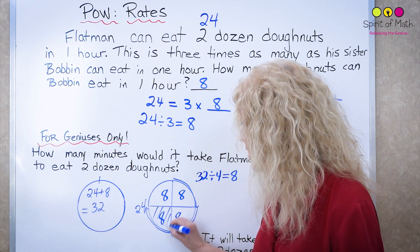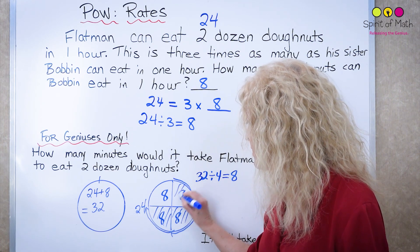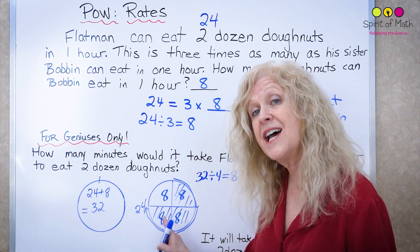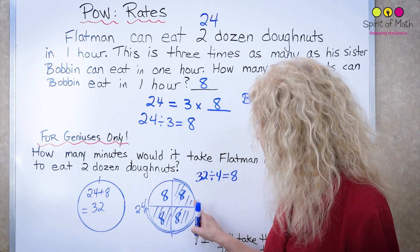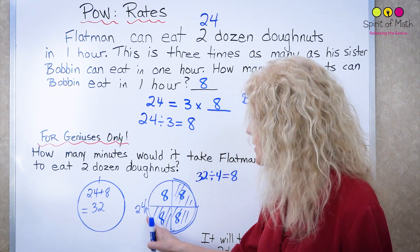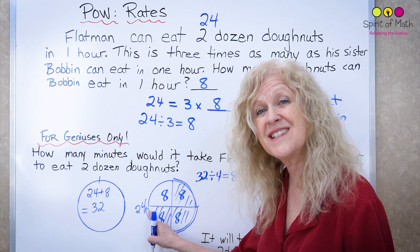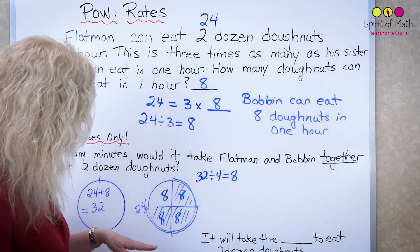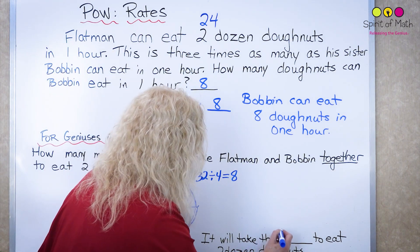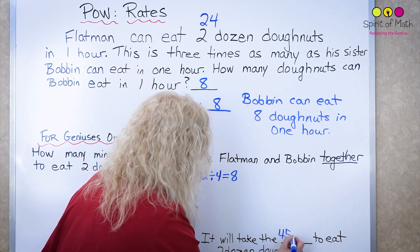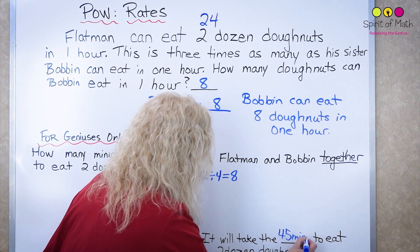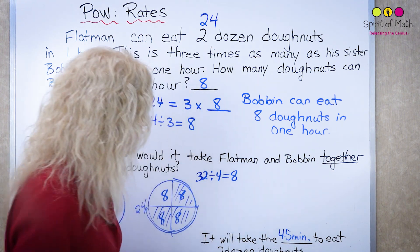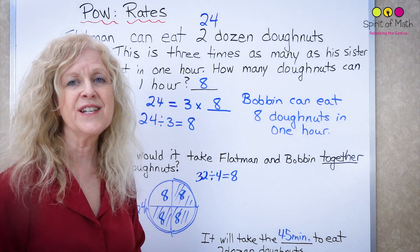There's your 24. This makes a total of 24 doughnuts and how long is that? This is 15 minutes this is half an hour and another 15 minutes is 45 minutes. So together it will take them 45 minutes, put a dot after because it's short form, to eat two dozen doughnuts.